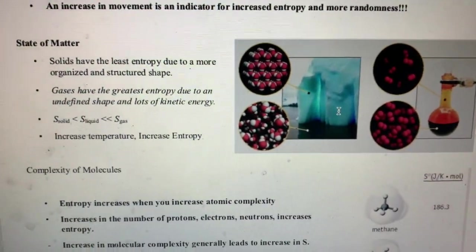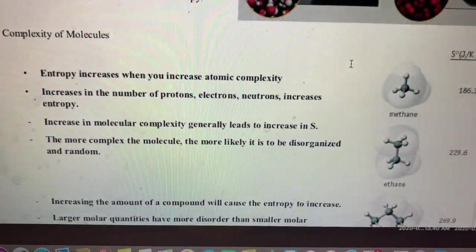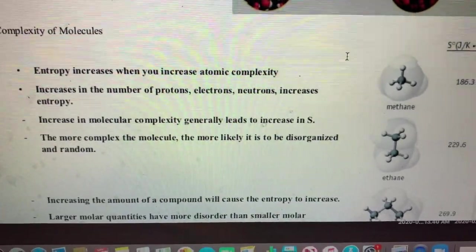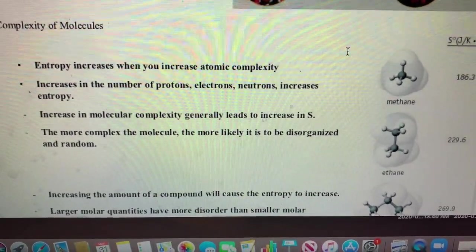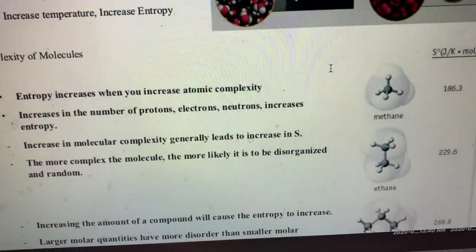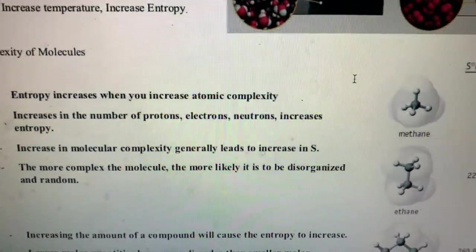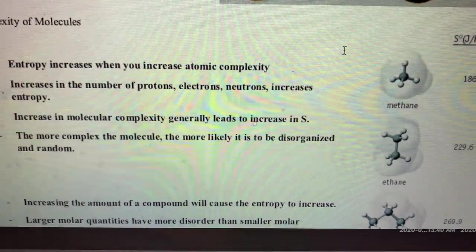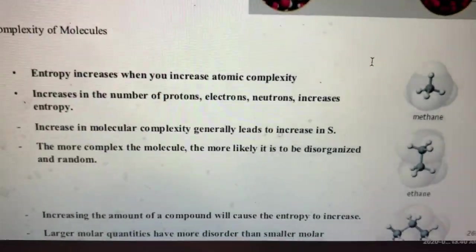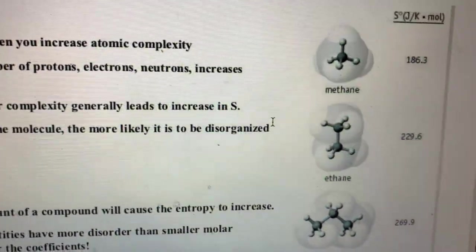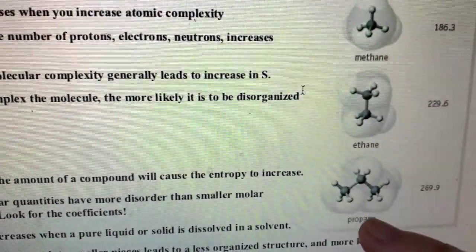As we move on, the next thing is complexity of molecules. Entropy increases when you increase atomic complexity. Therefore, the larger the atom you have, the more entropy it's going to have. The larger the molecule, the more entropy it is going to have. On the side you can see some different organic compounds that we're just comparing here and how their entropy values are increasing with increased complexity.